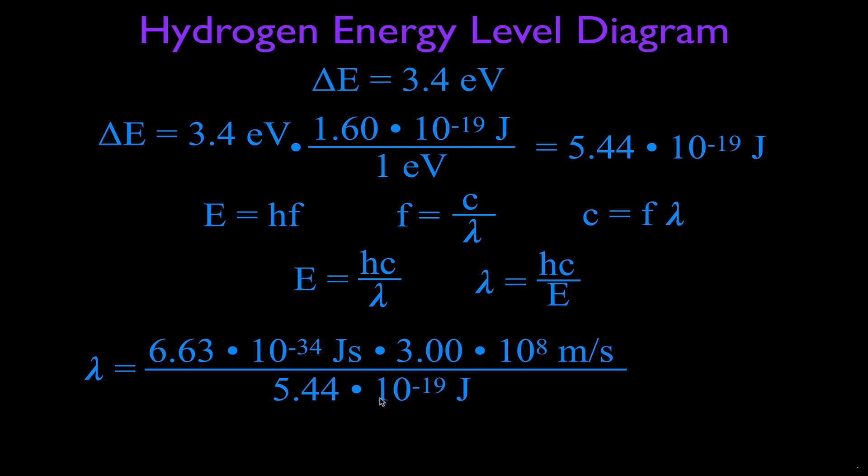And we divide that by this energy, 5.44 times 10 to the -19 joules. And that will give us, not actually 366, but when we do this officially, when we multiply these two values and divide by the energy, we get 3.656 times 10 to the -7.